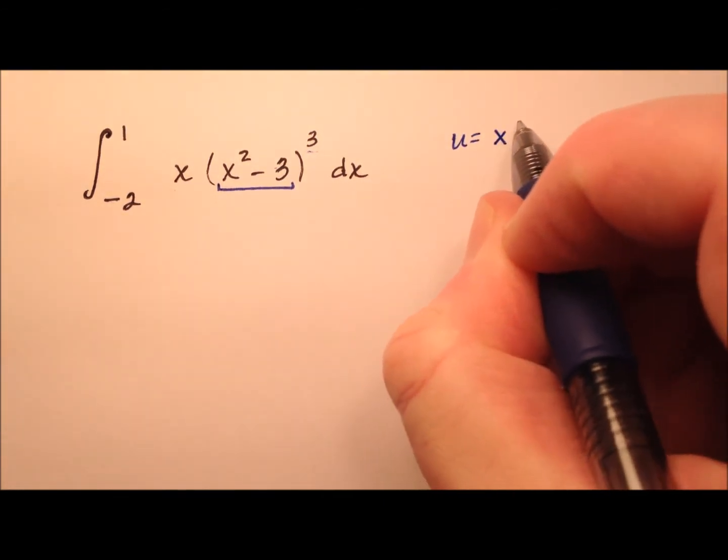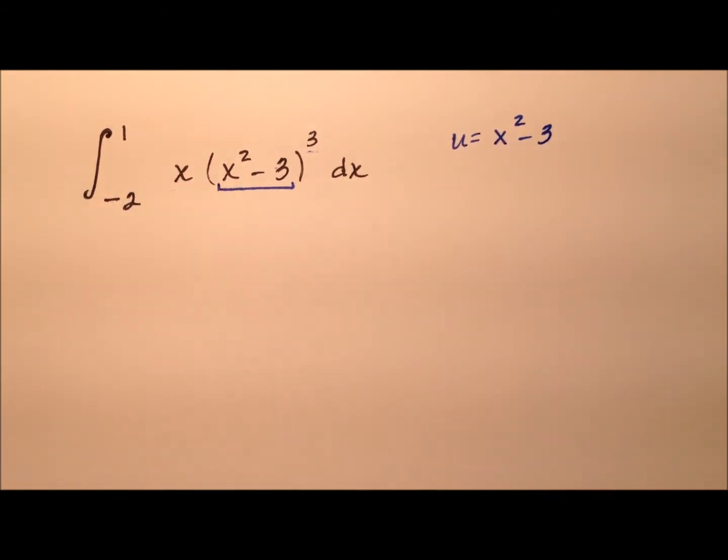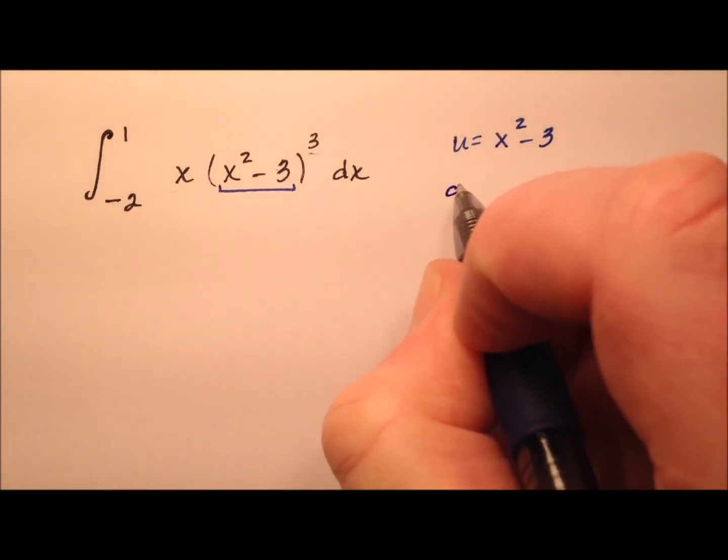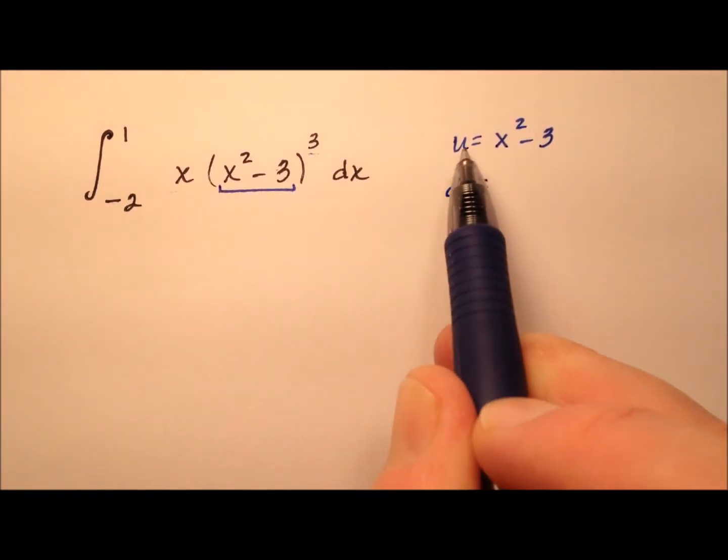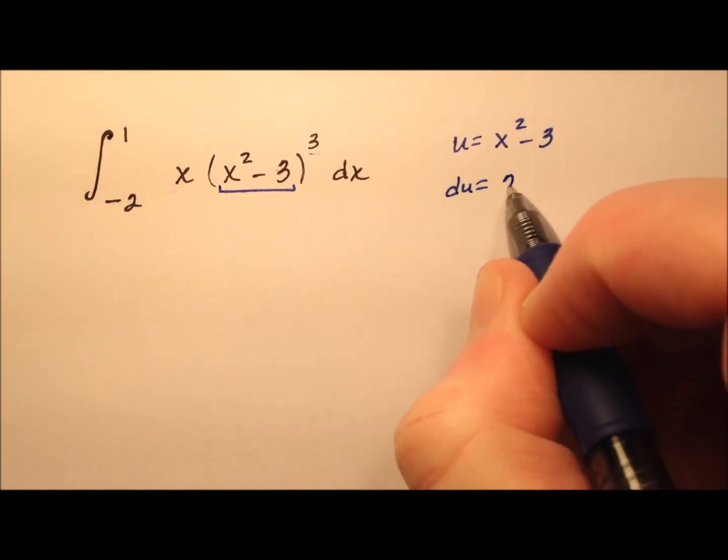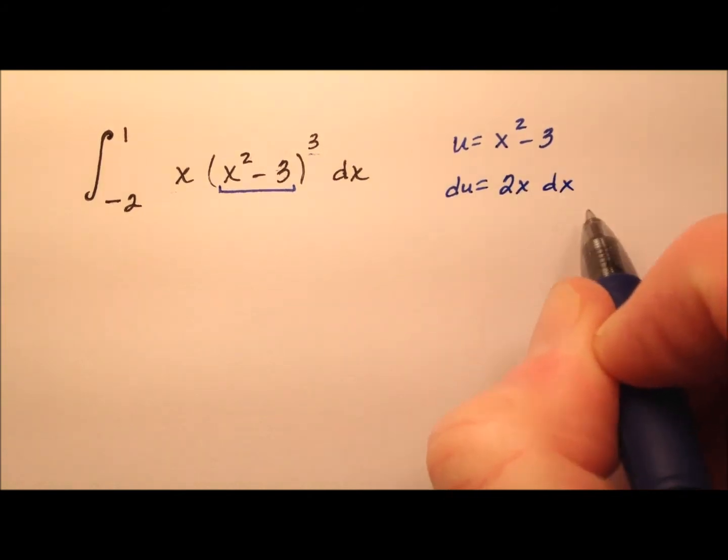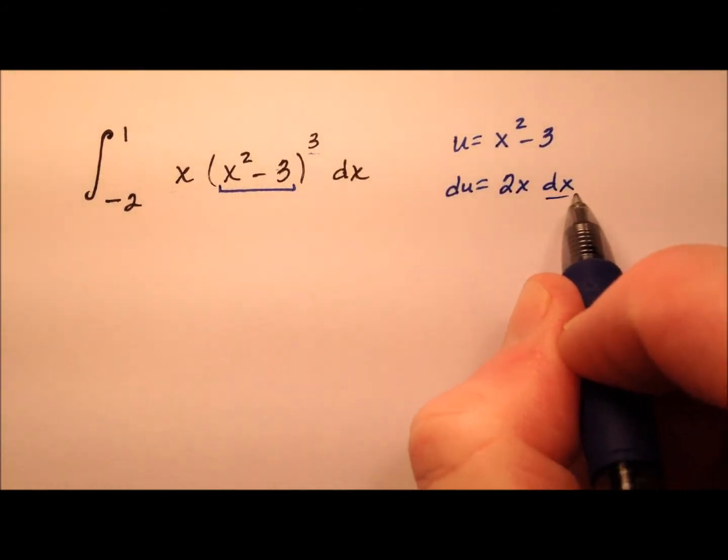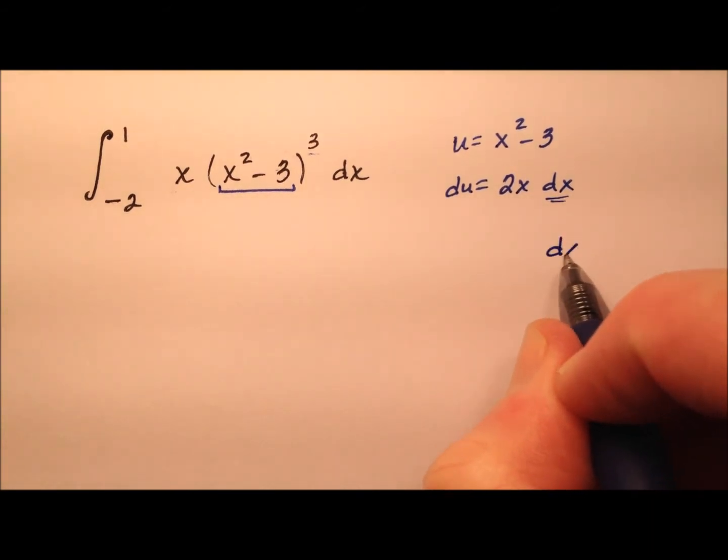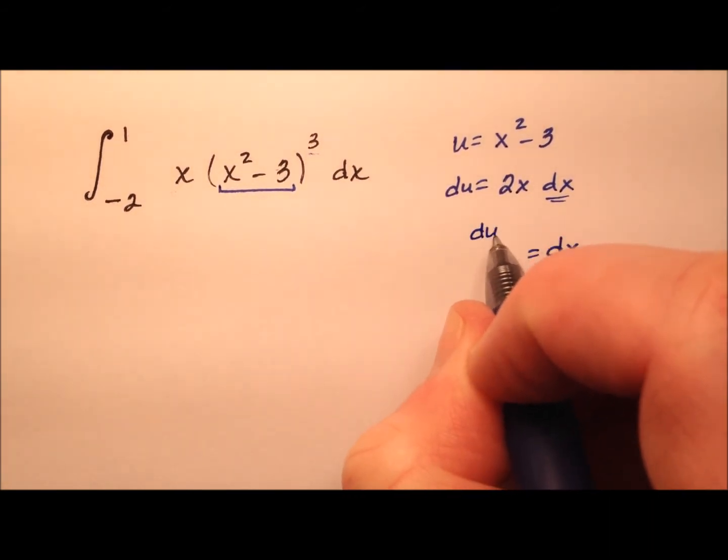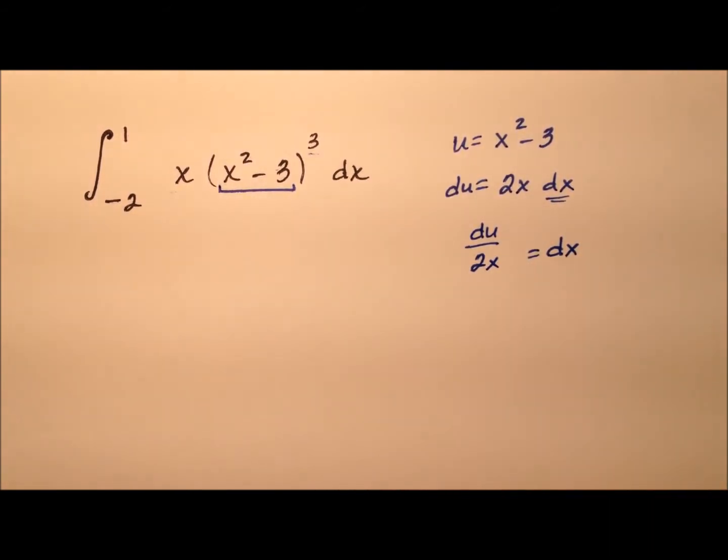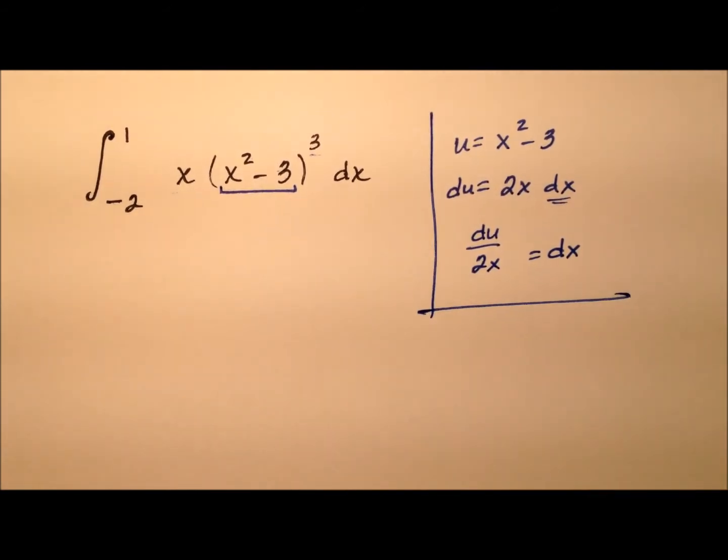So u equals x squared minus 3. When I differentiate both sides, I have du equals 2x dx on that right side, and then solving for dx, I'll have dx equals du over 2x.